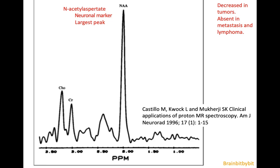The largest peak you should normally see in the brain is NAA, which is a neuronal marker — a metabolite formed in the mitochondria of neurons and neuronal precursors — and it should always be the largest peak. If there is no neuronal tissue, for example in a lymphoma or metastasis, it is absent; and in a glial tumor it is decreased.